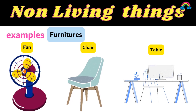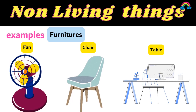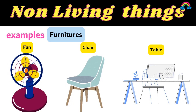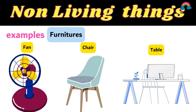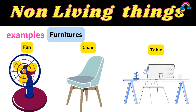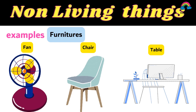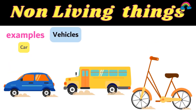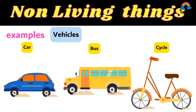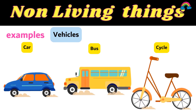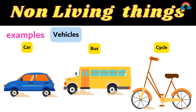Here are some examples of non-living things. Furniture like fans, chairs, and tables are non-living things. Vehicles like cars, buses, and cycles are also non-living things.